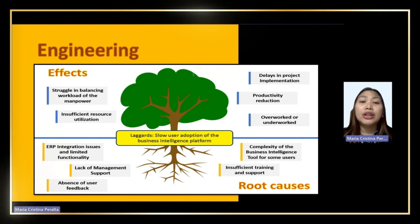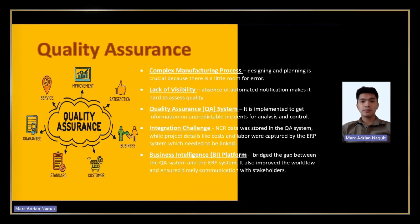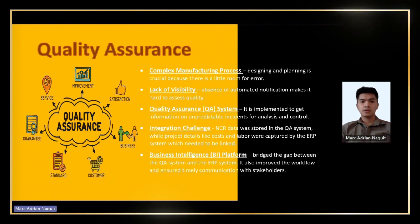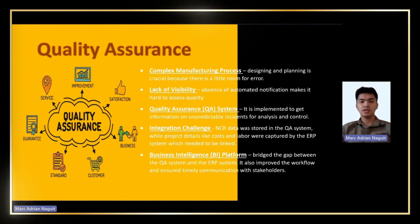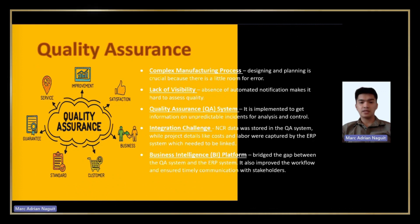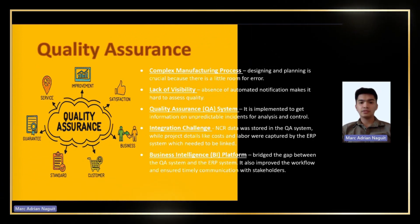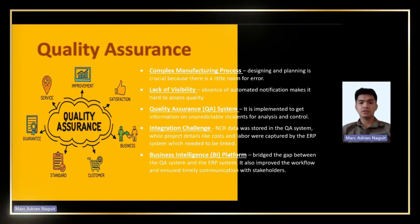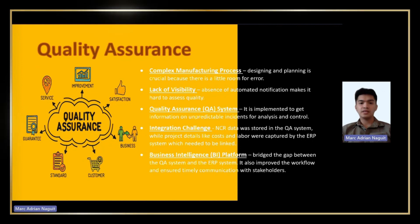Manufacturing a tunnel boring machine is a complex process that involves concurrent engineering, where designing and planning are crucial. There is little room for error, and the lack of visibility makes it hard to assess quality due to the absence of automated notification. The QA system is implemented to get information on unpredictable incidents for analysis and control. The BI platform provides a solution to improve workflow and ensure timely communication with stakeholders by bridging the gap between the QA system and the ERP system.